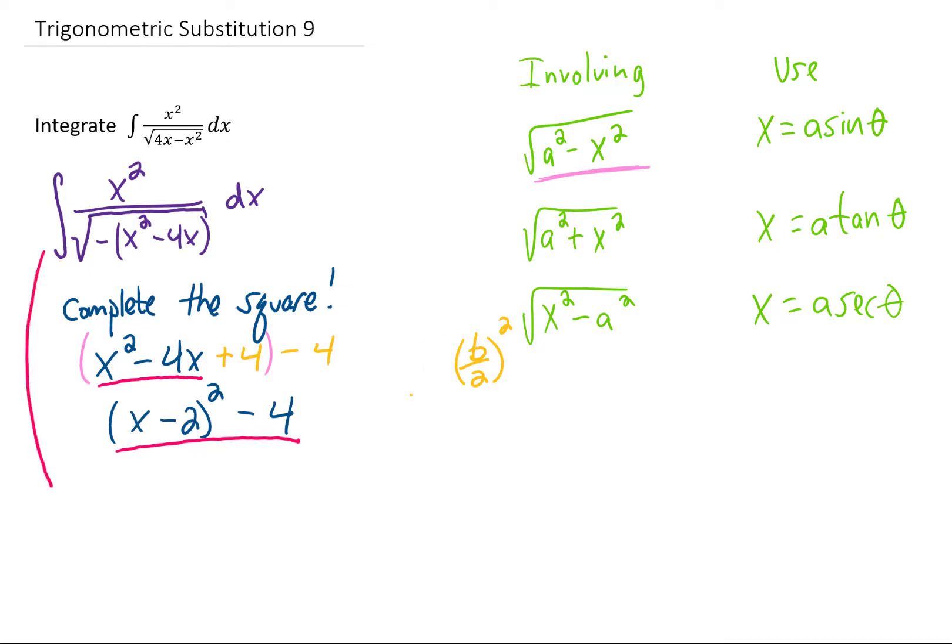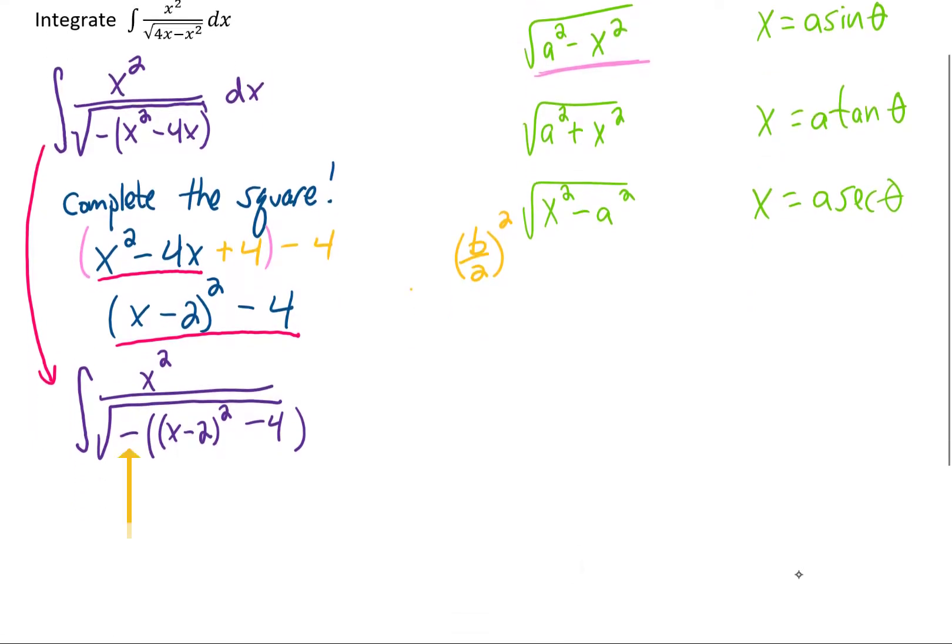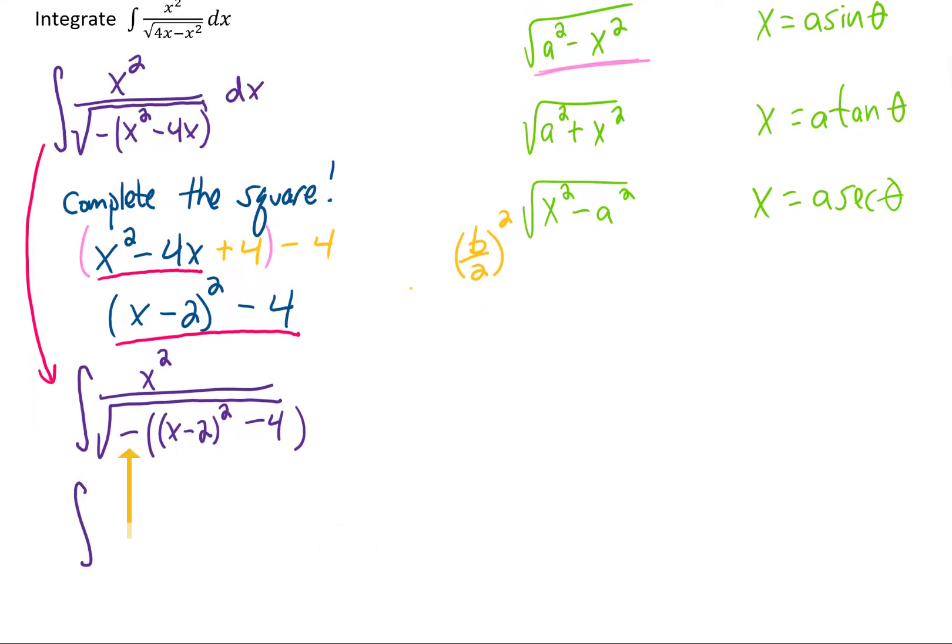So what we can do is plug that in up here to this integral. And if we do that, this is what we get. And now redistributing that negative sign inside the square root gives us our rewritten integral that looks a lot more like the form of the trigonometric substitution above.